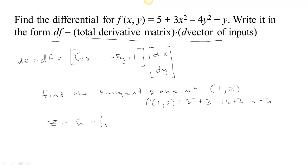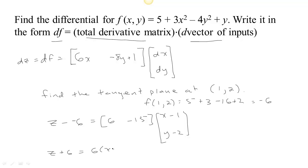At (1, 2), the slope in the x direction is 6, and the slope in the y direction is negative 16 plus 1, which is negative 15, times the change in x — that's how far x moves away from the center point 1 — and how far y moves away from its center point 2. Putting that together, we have z plus 6 equals 6 times (x minus 1) minus 15 times (y minus 2). You can recognize that this is the equation of a plane.